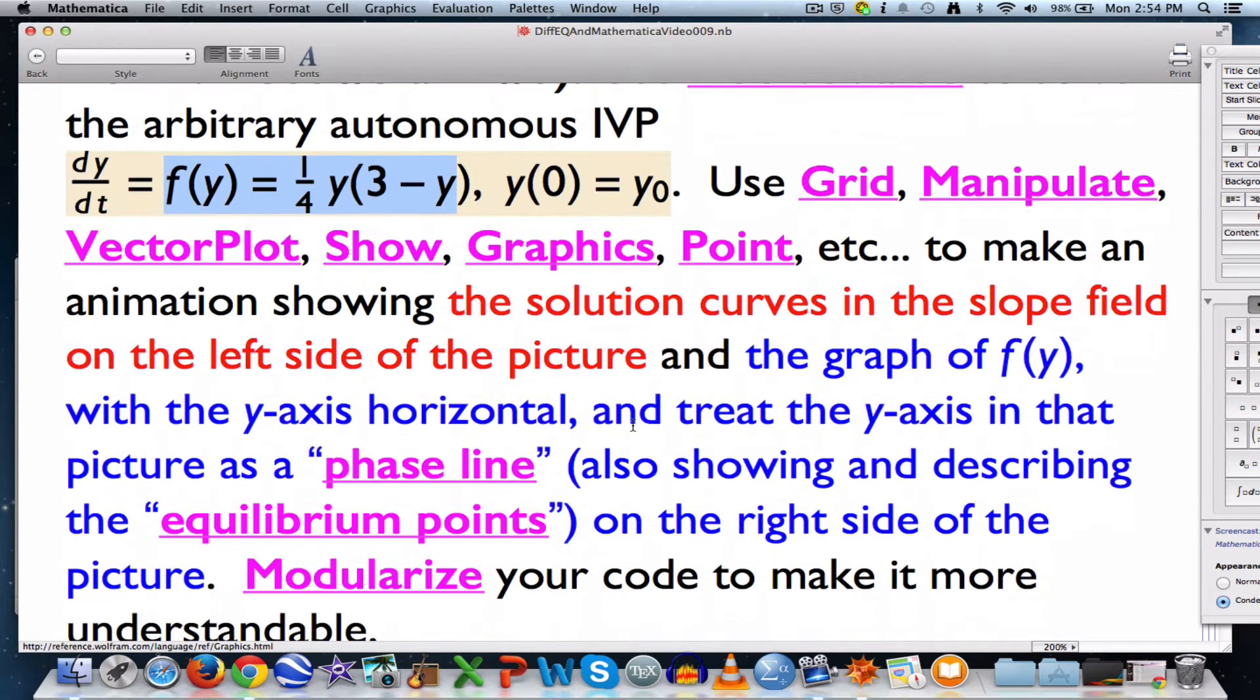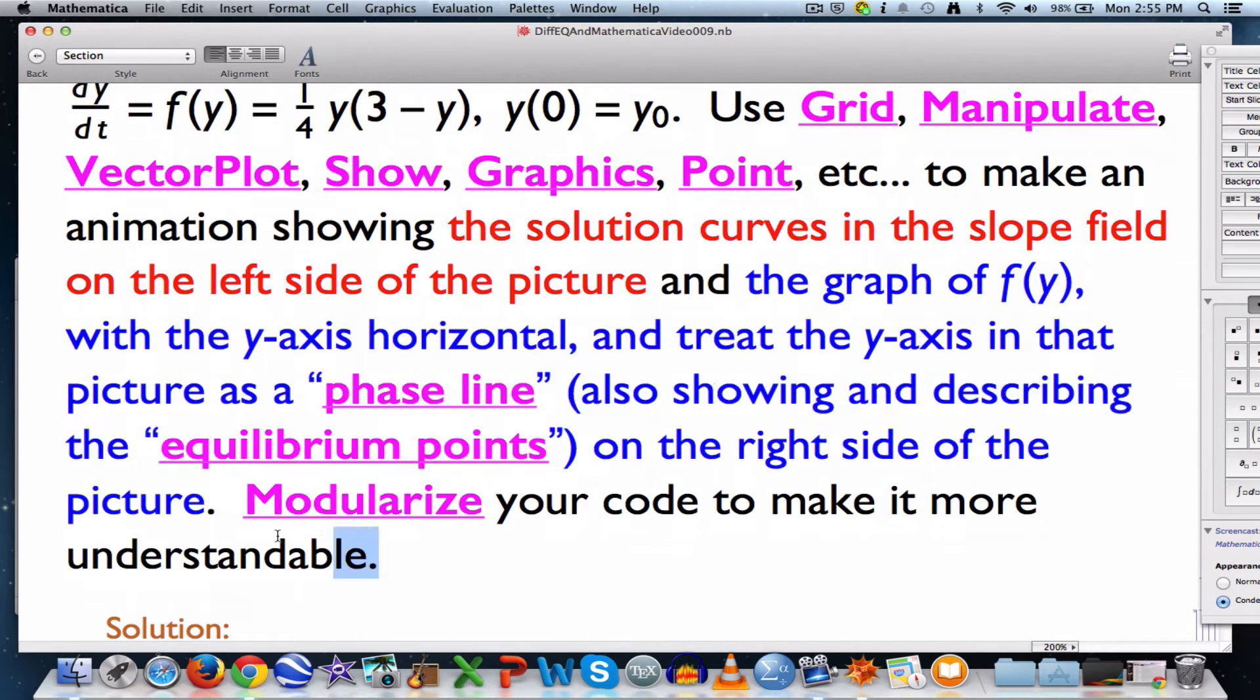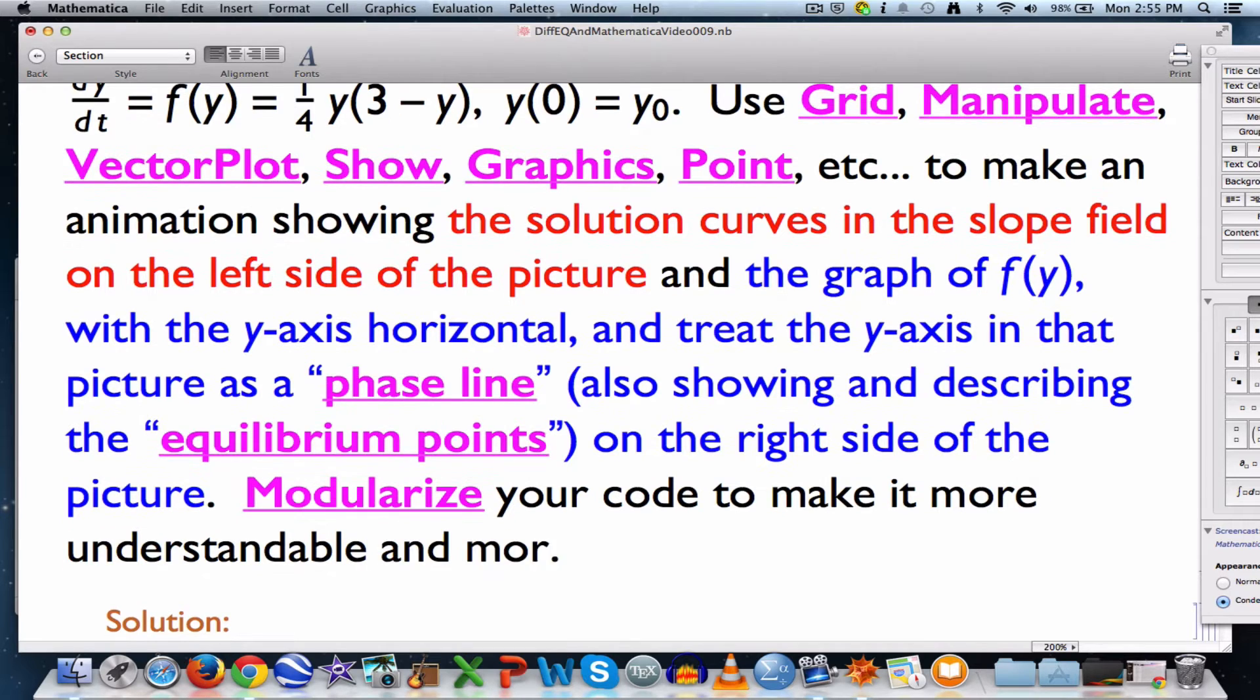Grid makes grids of graphs. We want to look at our solution curve in the slope field in the left side of the picture and make the graph of the right-hand side function in the right side of the picture. The y-axis is horizontal and becomes something called the phase line, and we'll talk about equilibrium points. We're going to modularize our code a bit to make it more understandable and more flexible.